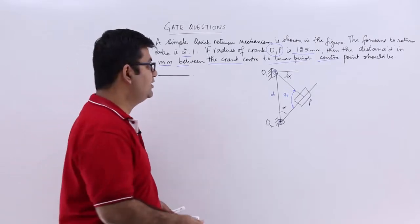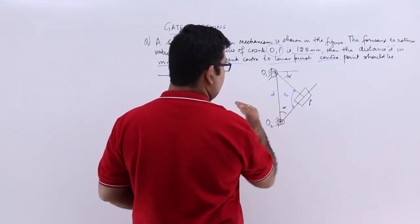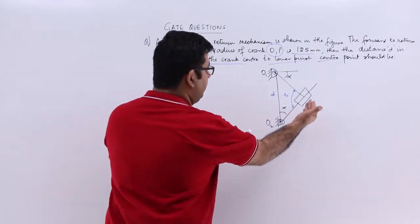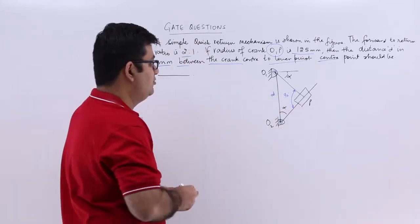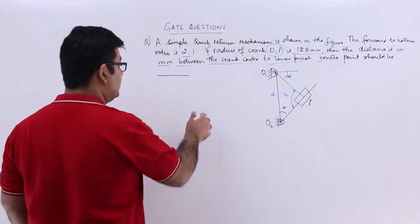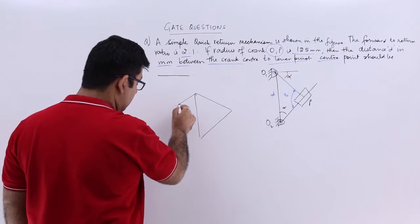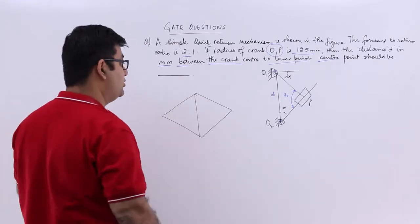Let us assume that this is the first or you can say extreme position. The other extreme position would be towards the left hand side. So if you have to draw the extreme positions, it would be something like this. So this is how the extreme position would look like.